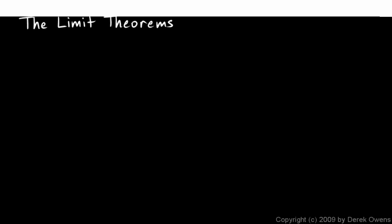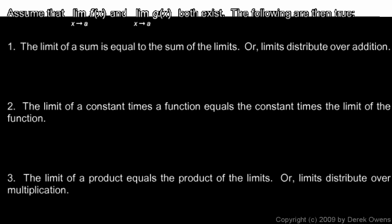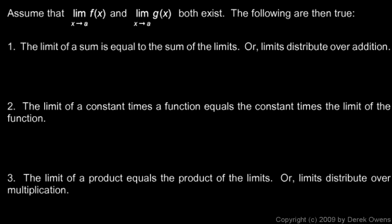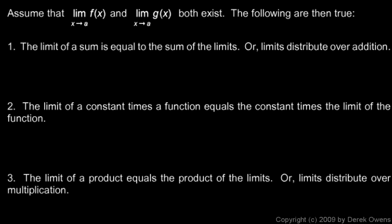Now we'll talk about the limit theorems — think of these as the mathematical properties of limits, or how limits work mathematically. Here's our starting point: assume that we have a function f, and the limit as x approaches some value a exists, and we also have a function g, and the limit of function g exists. So imagine two functions f and g that both have a limit at a — then the following are true.